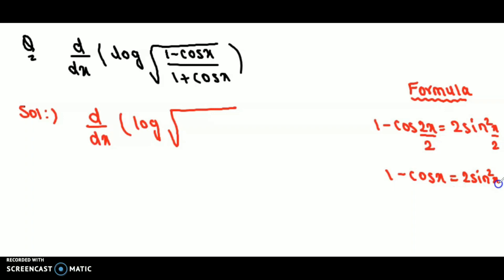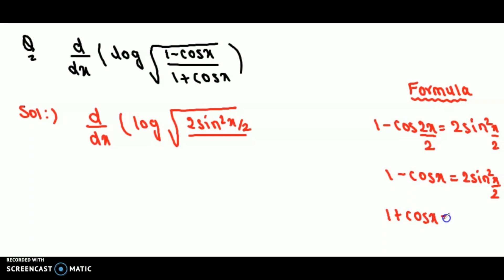So basically we get the formula: 1 minus cos x equals 2 sin²(x/2). Using this formula, 1 minus cos x becomes 2 sin²(x/2). Similarly, 1 plus cos x becomes 2 cos²(x/2).